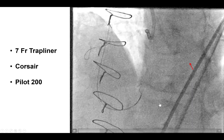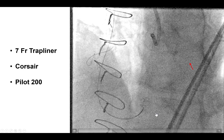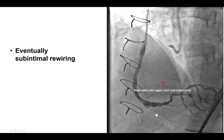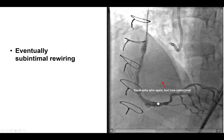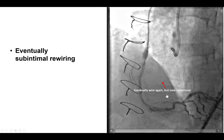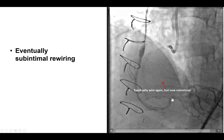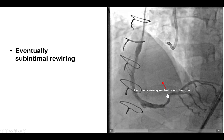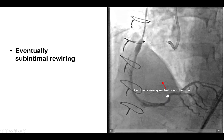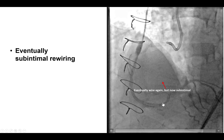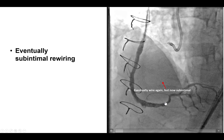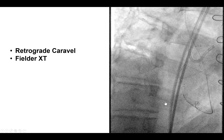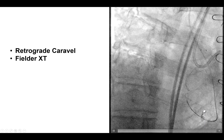Recurrent attempts were made. The guide wire was having a hard time making it to the right coronary artery. But eventually, after multiple attempts, we were able to advance the wire. It does appear, however, that the retrograde wire is going into the sub-intimal plane.